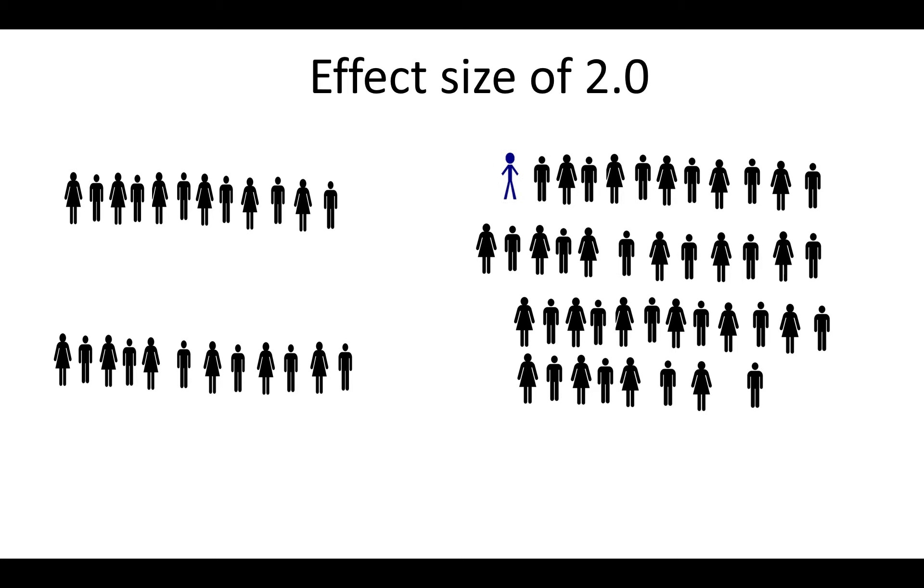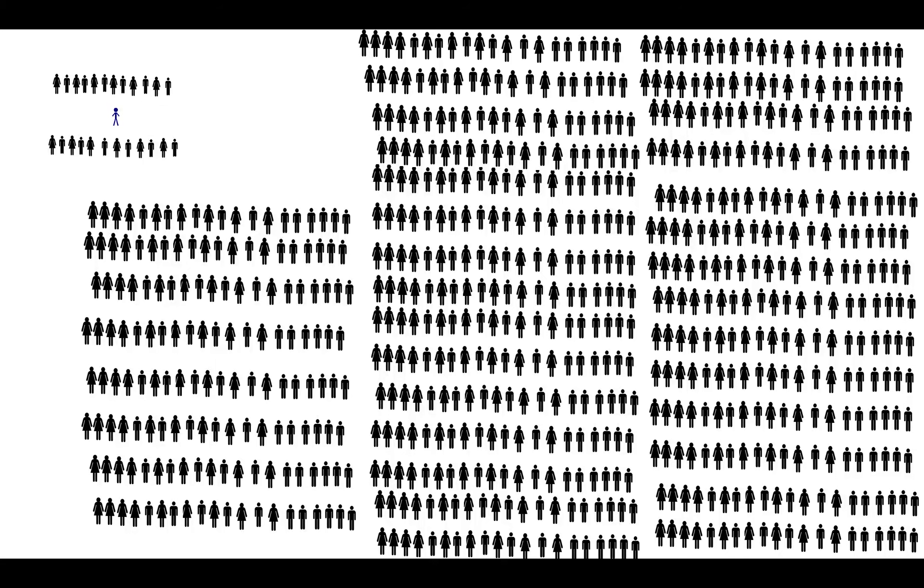And the most extreme example we have, an effect size of 3. If John, remember John is an average student in his class, if he were moved to a group of 740 students who did not receive the intervention, he would be on the top of that group.